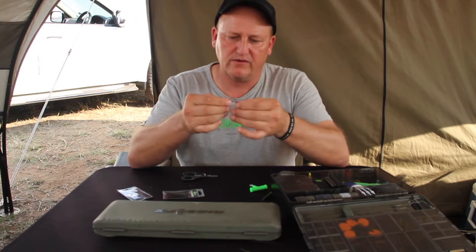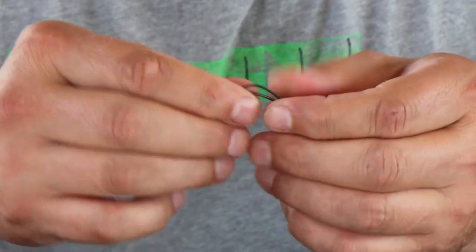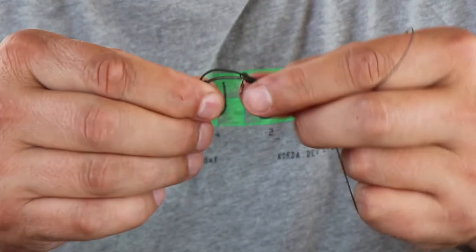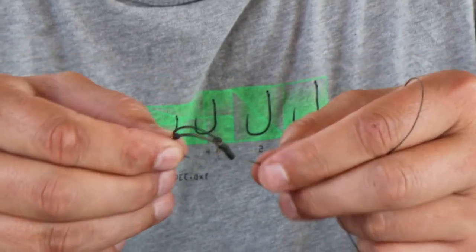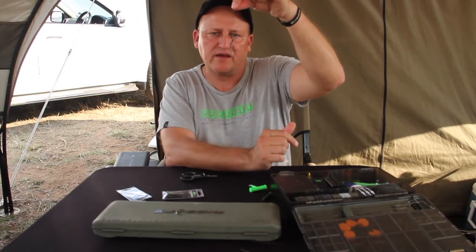Just like so. And all I do now, slide this up a little bit, put it in position, and voila! We've got a blowback D-rig.